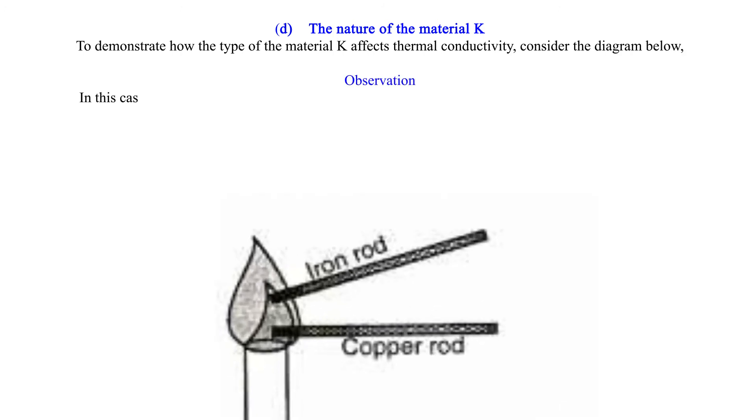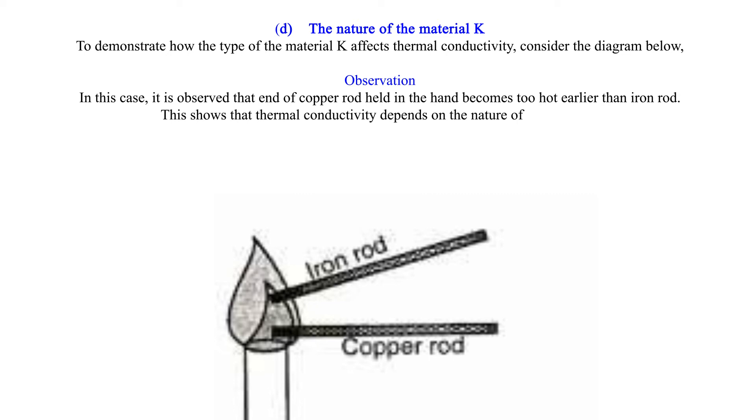Observation: In this case, it is observed that end of copper rod held in the hand becomes too hot earlier than iron rod. This shows that thermal conductivity depends on the nature of the material.